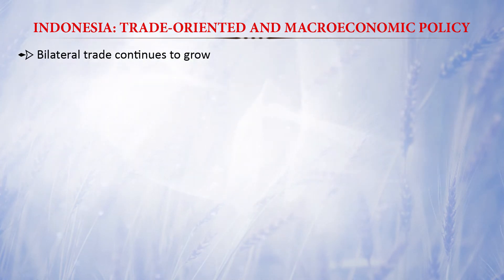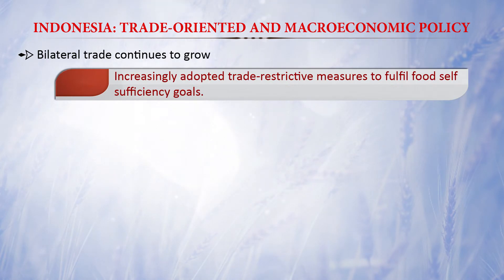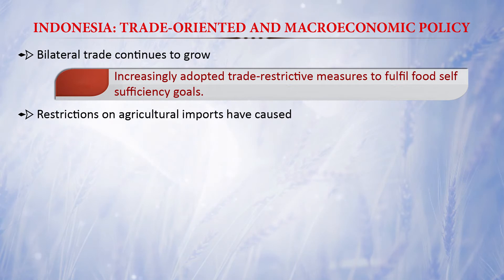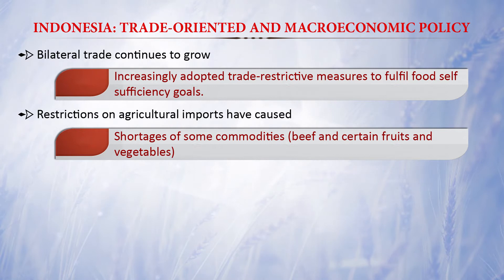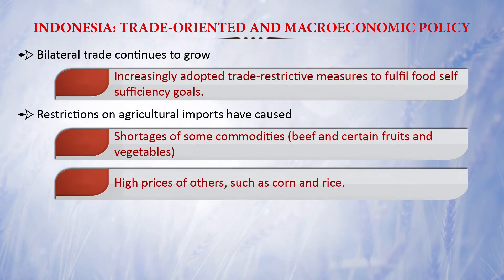Indonesia increased export restrictions, with the purpose of promoting conservation of scarce resources, increasing domestic processing industries for value added and employment, and preserving the environment. Indonesia increasingly adopted trade-restrictive measures to fulfill food self-sufficiency goals. Restrictions on agriculture imports led to shortages of commodities like beef, certain fruits and vegetables, and high prices for corn and rice.